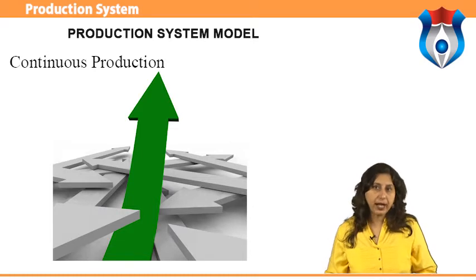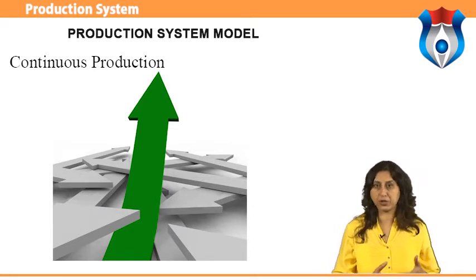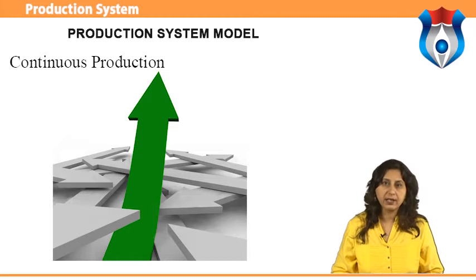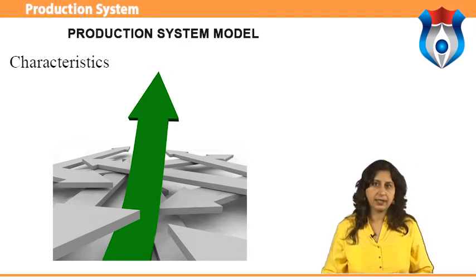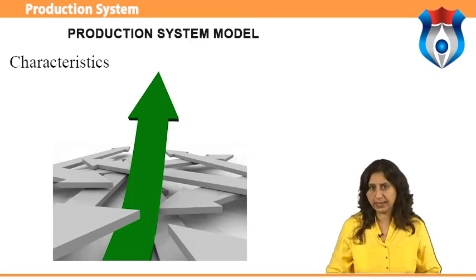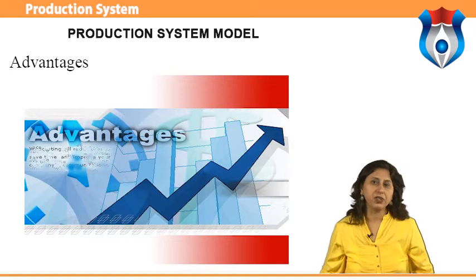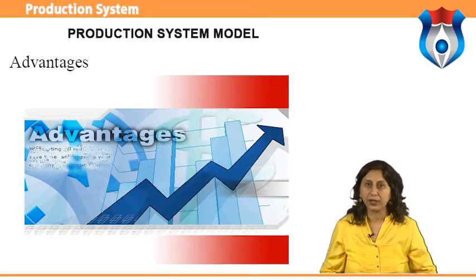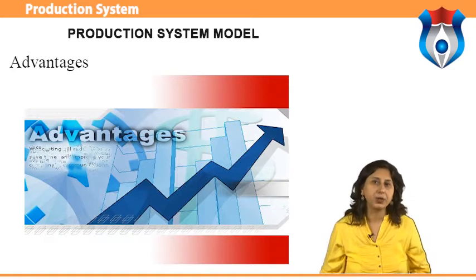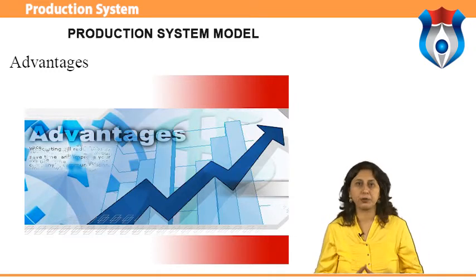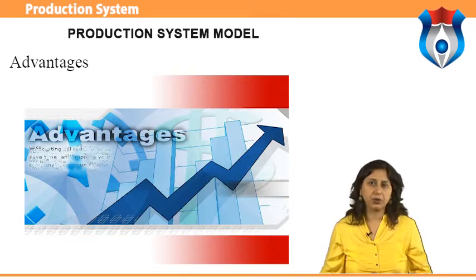In continuous production, facilities are arranged as per the sequence of production operations from the first operation to the finished product. Items are made to flow through the sequence of operations through material handling devices such as conveyors and transfer devices. Characteristics include dedicated plant and equipment with zero flexibility. Advantages include: standardization of product and process sequence; higher rate of production with reduced cycle time; higher capacity utilization due to line balancing; manpower is not required for material handling as it is completely automatic; persons with limited skills can be used on the production line; and unit cost is lower due to high volume of production.